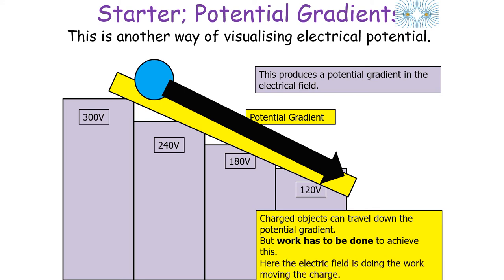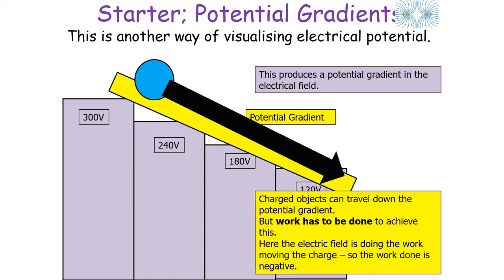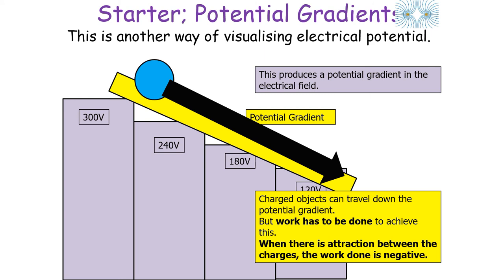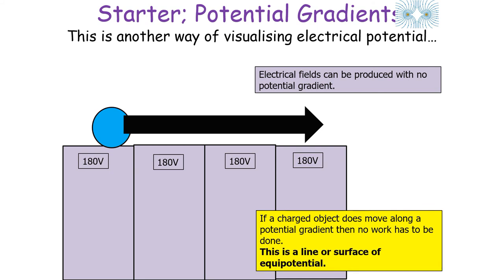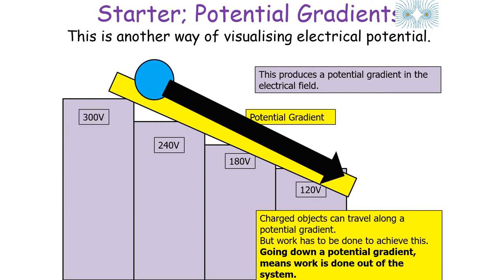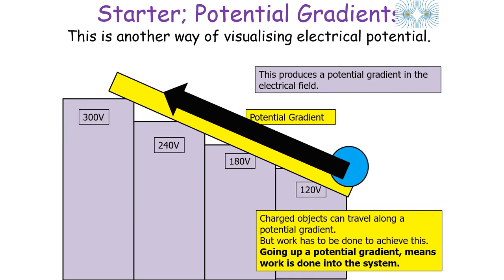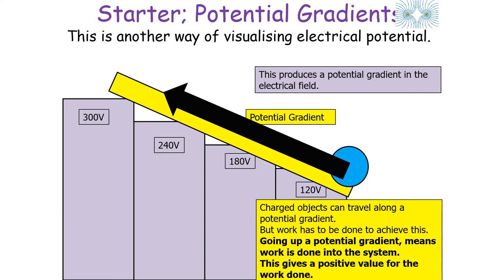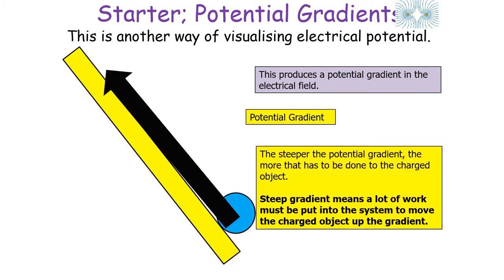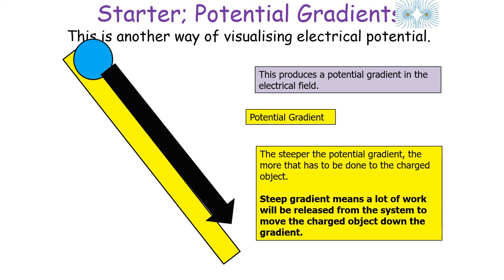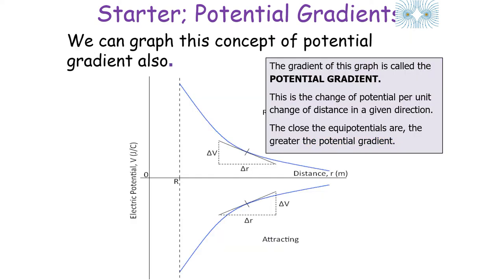Work has to be done for objects to travel down a potential gradient — the electrical field does the work moving the charge, so the work done is negative. When there is attraction between charges the work done is negative. If the charge moves along an area of no potential gradient, no work is done — that's an equipotential line or surface. Going down a potential gradient means work is done out of the system; going up a potential gradient means work is done into the system with a positive value. When there is repulsion the work done is positive.